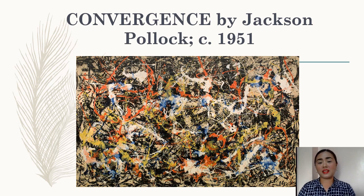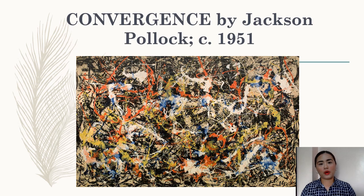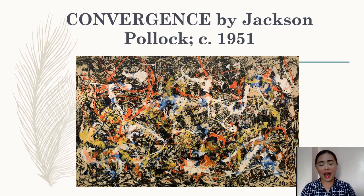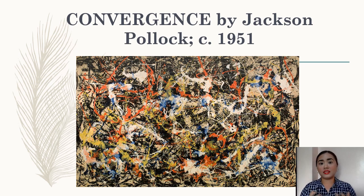Looking at this painting by Jackson Pollock entitled Convergence, what aspects showcase the principle of variety? The painting utilized different colors — you can see orange, white, blue, yellow, black, and more. Aside from that, the lines go in different directions. You can see not only vertical lines but also horizontal and diagonal lines.